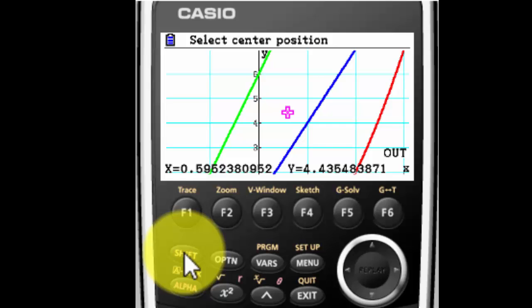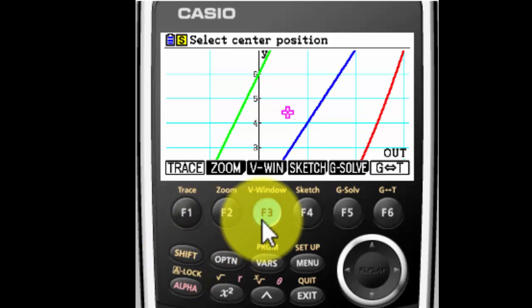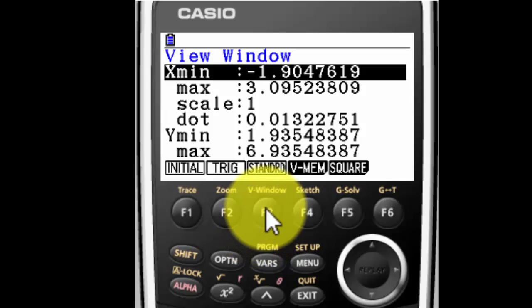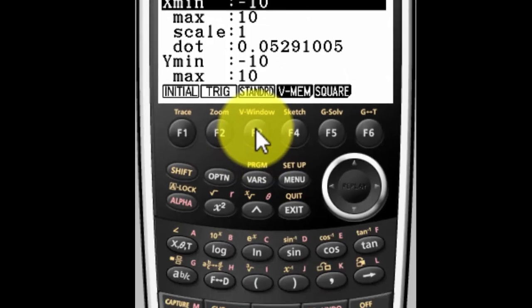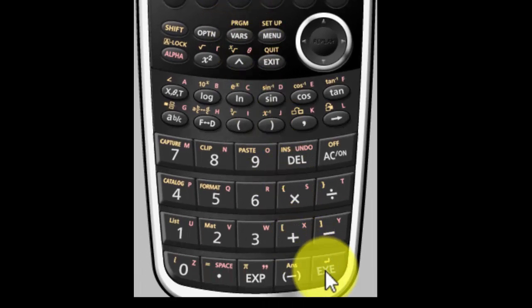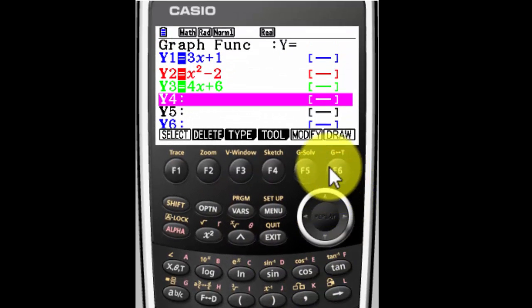Let me change my view window. So I'm going to go to Shift-F3, which is view window. And I'm going to give myself a standard view window, which is negative 10 to 10 on both the x and the y axis. Increments of 1. Execute. Draw.